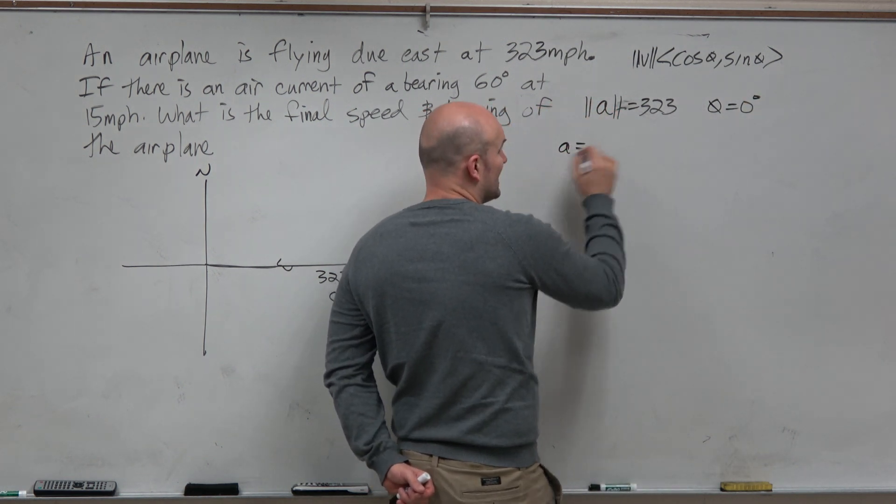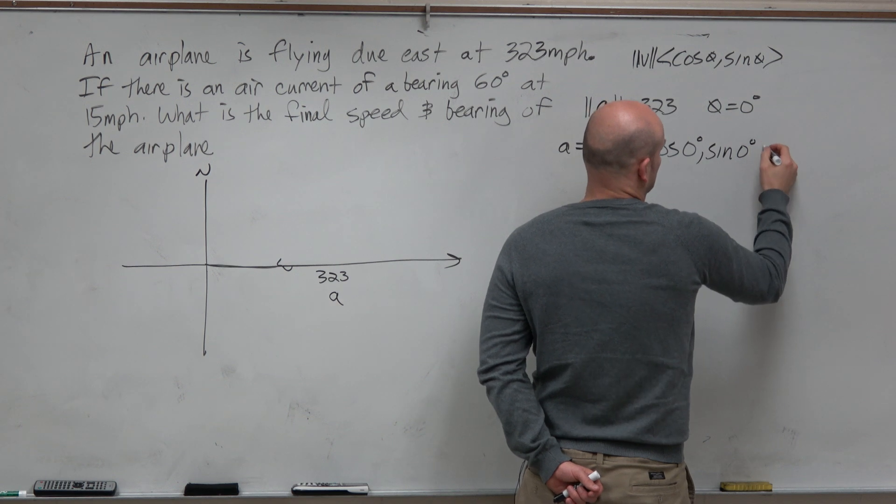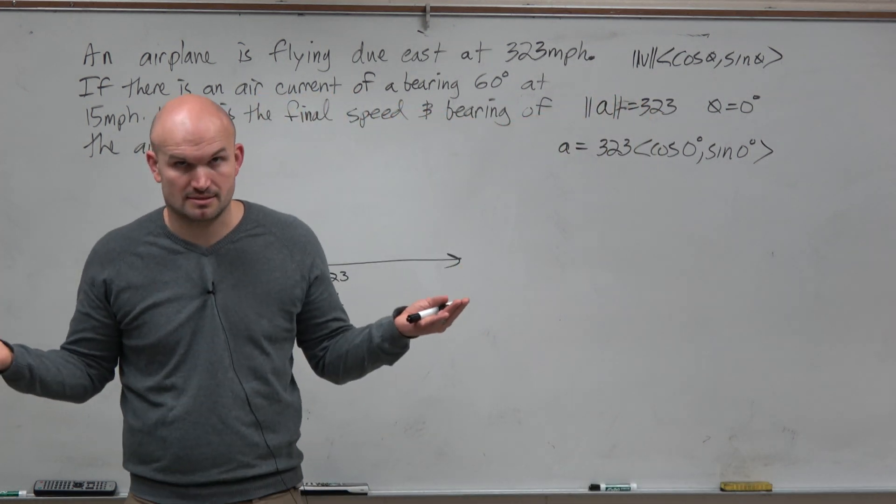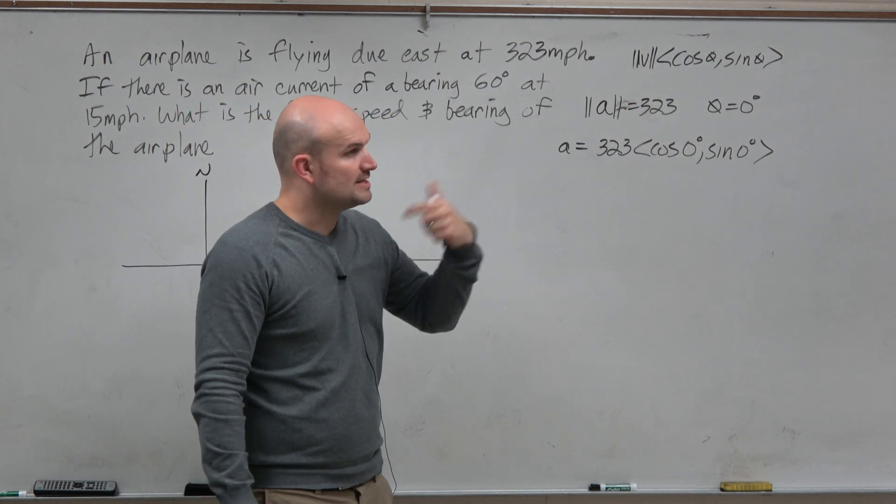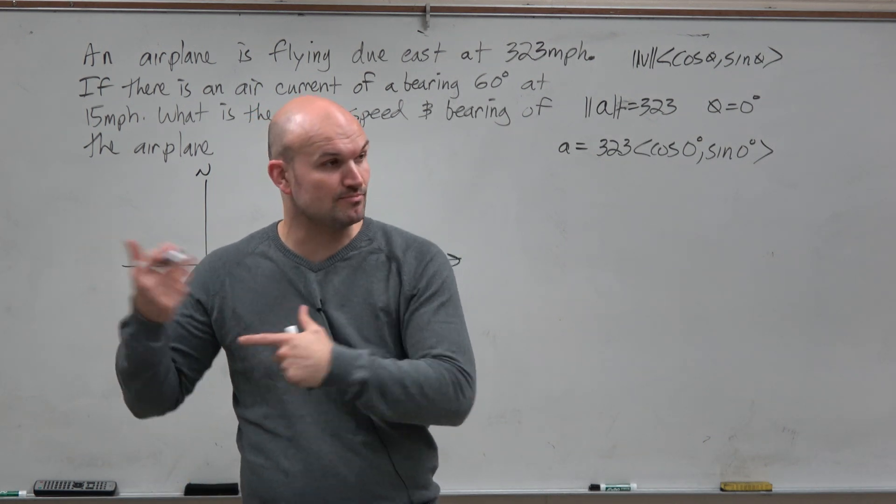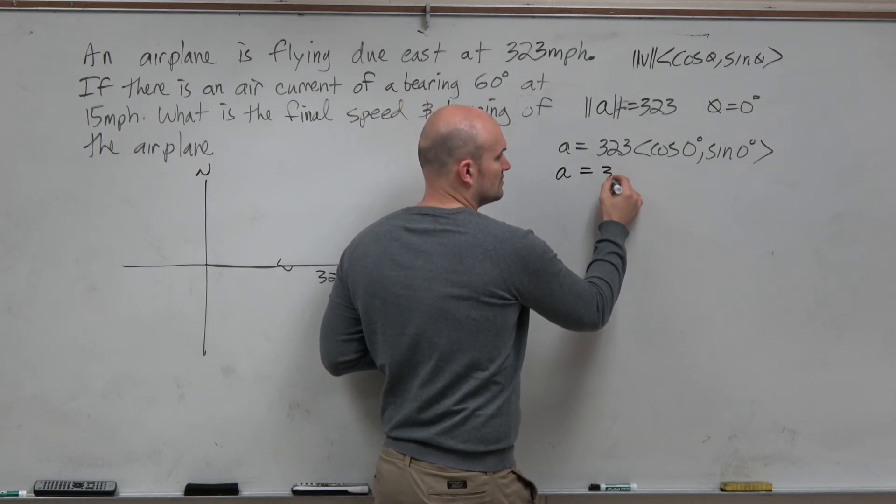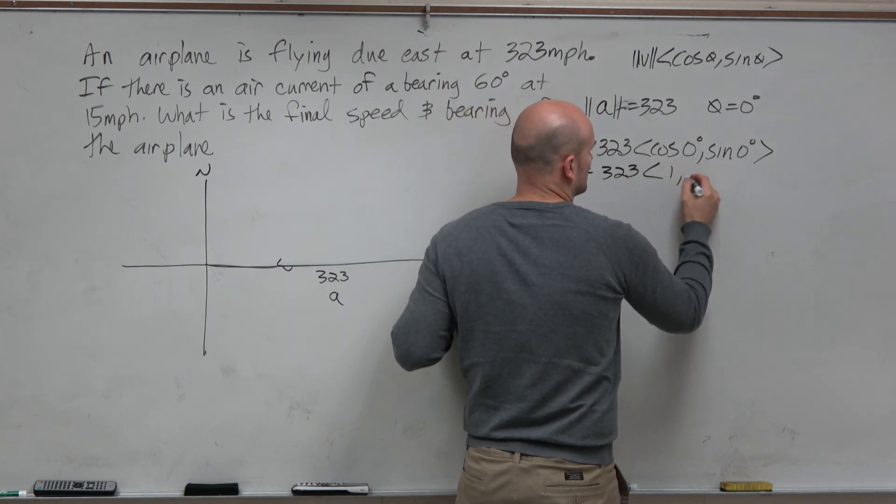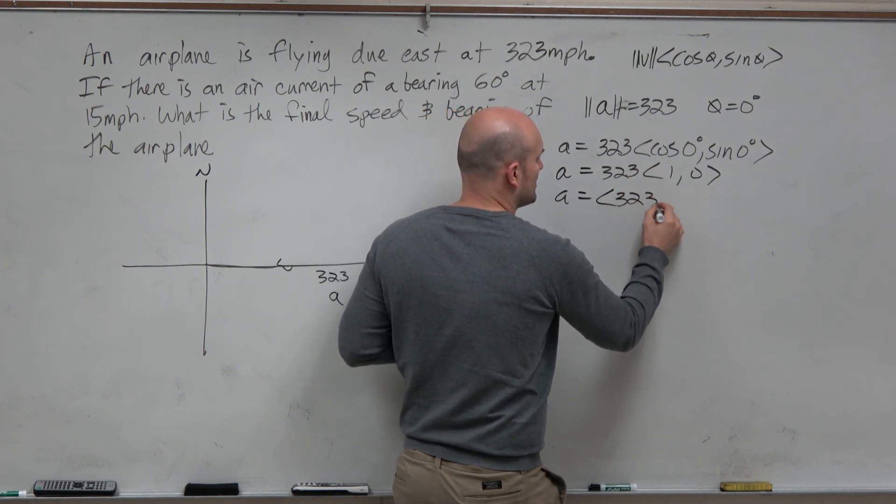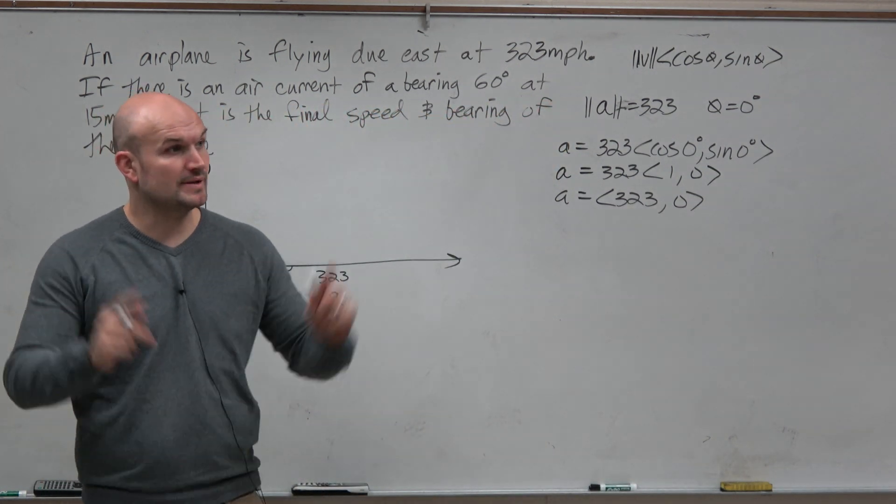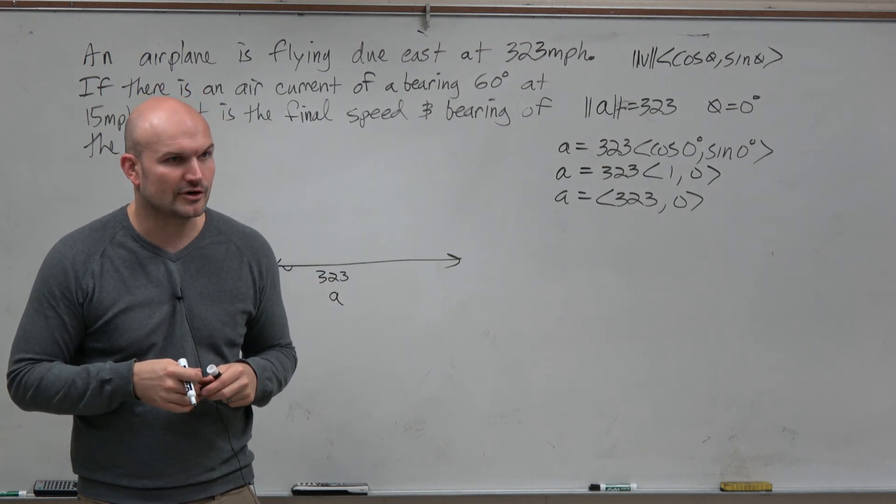We learned three forms to write a vector. We learned from our initial point and our terminal point, component form, linear combination, as well as when given a magnitude and an angle. So any vector can be written in terms of its magnitude and angle. Since this is an airplane, let's call this vector A. So vector A has a magnitude of 323 and has an angle of zero degrees. That means I can represent vector A as 323 times the cosine of zero degrees times the sine of zero degrees. Now, typically what we want to do is always put your vector in component form. The cosine of zero is one, so there you go. Now we have the vector for the airplane.